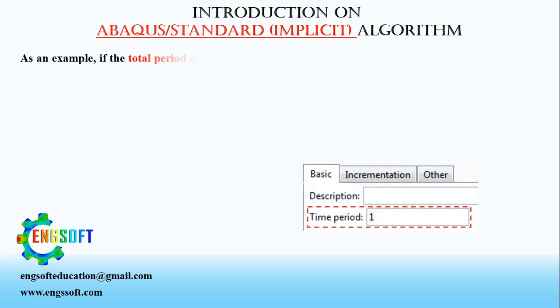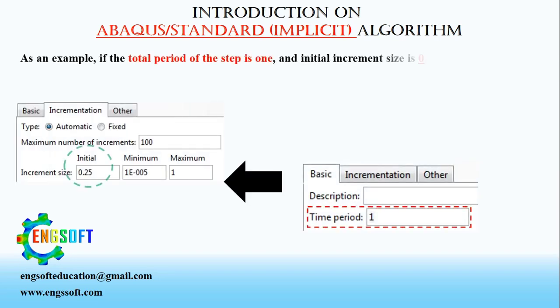As an example, if the total period of the step is 1, and initial increment size is 0.25, the problem will be solved in 4 increments. Therefore, the initial increment size directly determines the number of increments and also affects convergence rate in nonlinear problems.